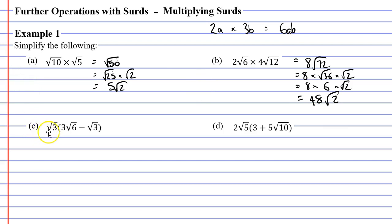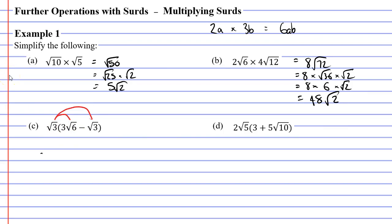Now moving on to question c. This time we have a set of brackets. When you expand brackets in algebra, you take the term to the left of the brackets and multiply it by each term inside — and that's exactly what we do with surds. So we start by taking root 3 and multiplying it by 3 root 6. We've only got one whole number, the 3, so we write that down first. We then multiply the surds: root 3 times root 6 gives us the square root of 18.